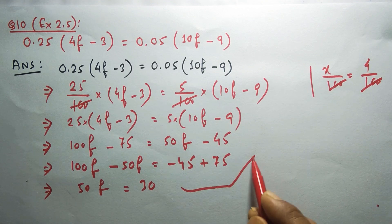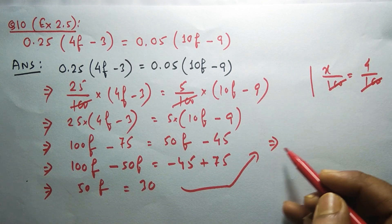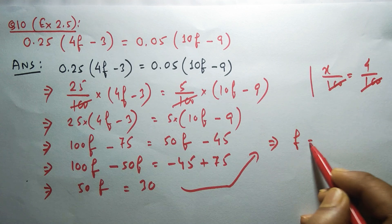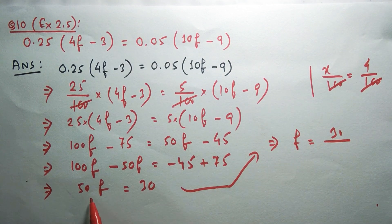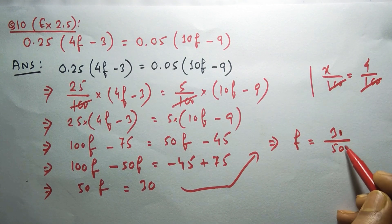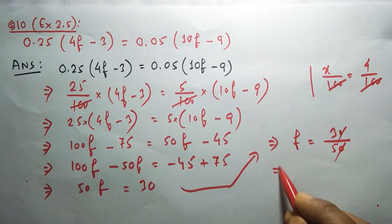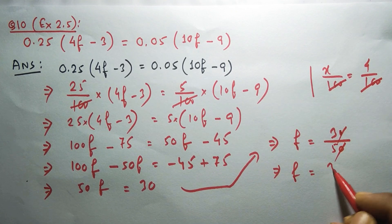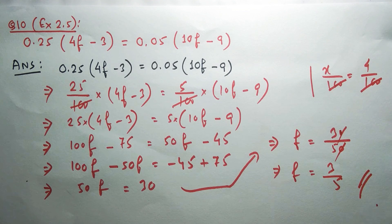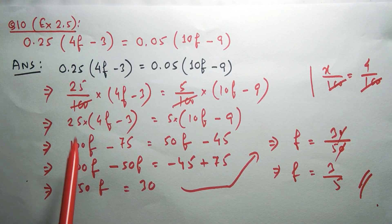This implies f equals 30, then 50 multiplies here, so it will be divided on the other side. 30 by 50, zeros get cancelled, we have f equals 3 by 5, and this is the required answer.